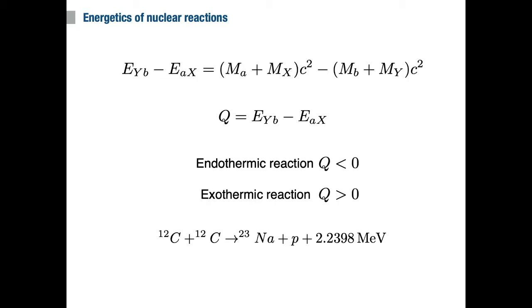So here is an example of an exothermic reaction that takes place in stars that are more massive than about 10 solar masses. In this reaction, two carbon nuclei combine to form a sodium-23 nucleus and a proton. The reaction liberates 2.23 MeV of energy, and therefore, it is an exothermic reaction.